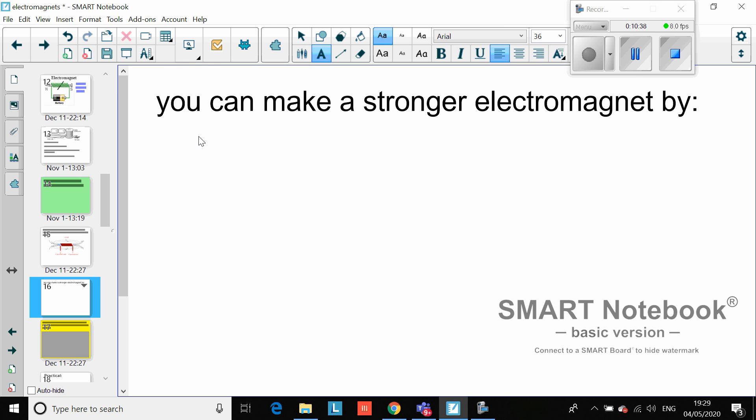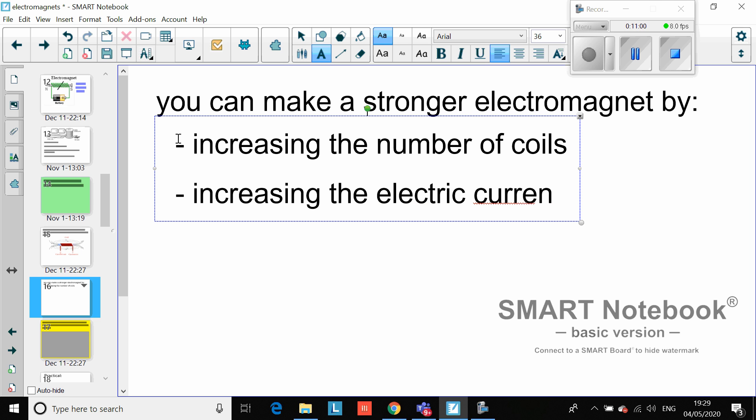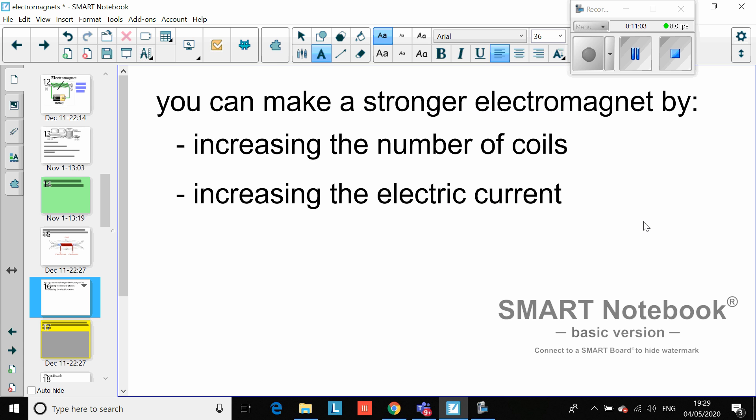The rules governing electromagnetism: you can make an electromagnet stronger by - and you do need to write these down because these are very important - increasing the number of coils, or increasing the electric current. Those are the two ways in which you can make an electromagnet stronger.